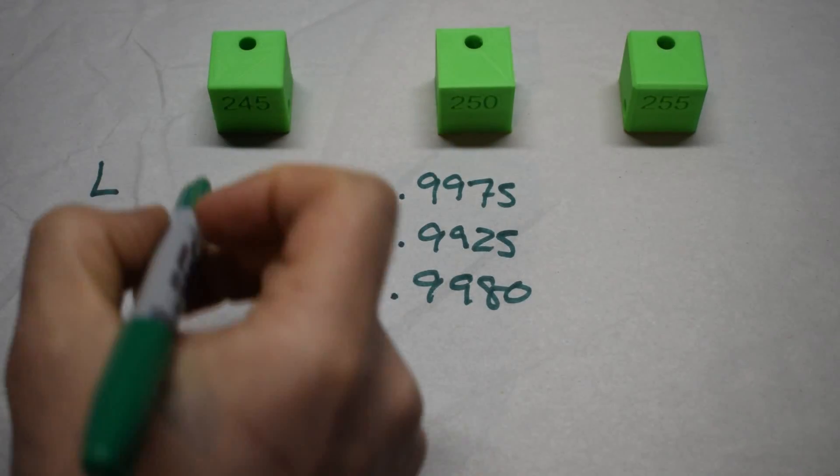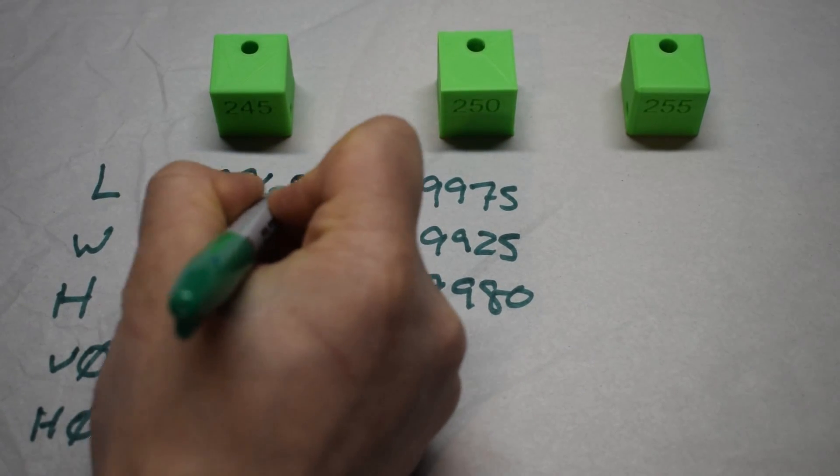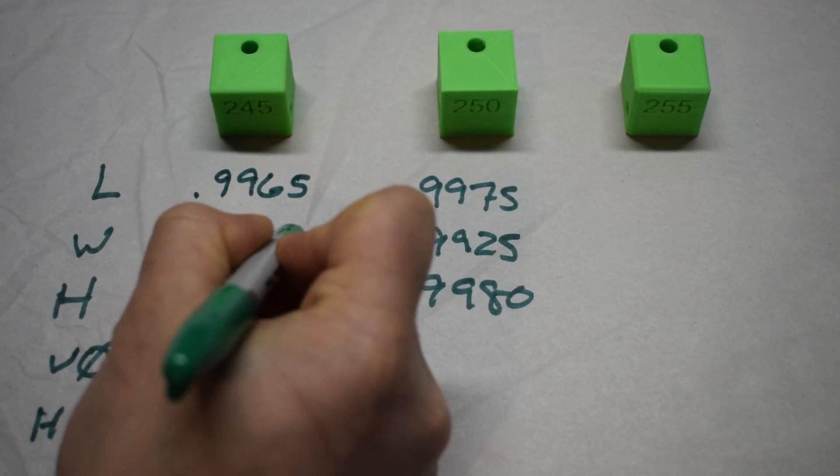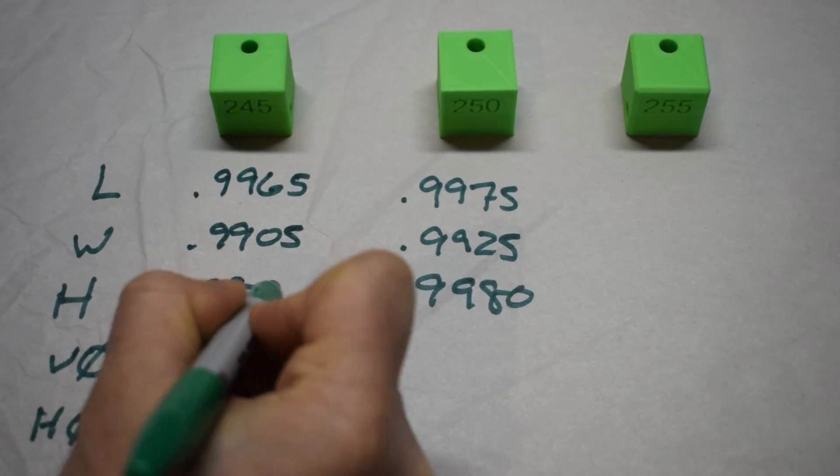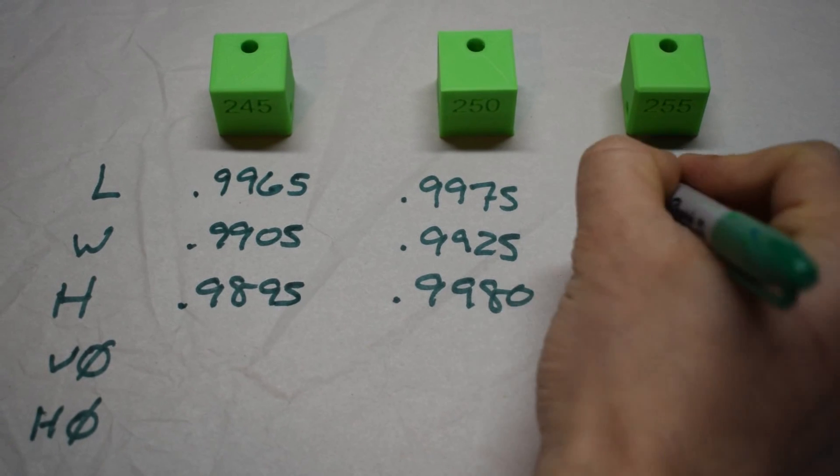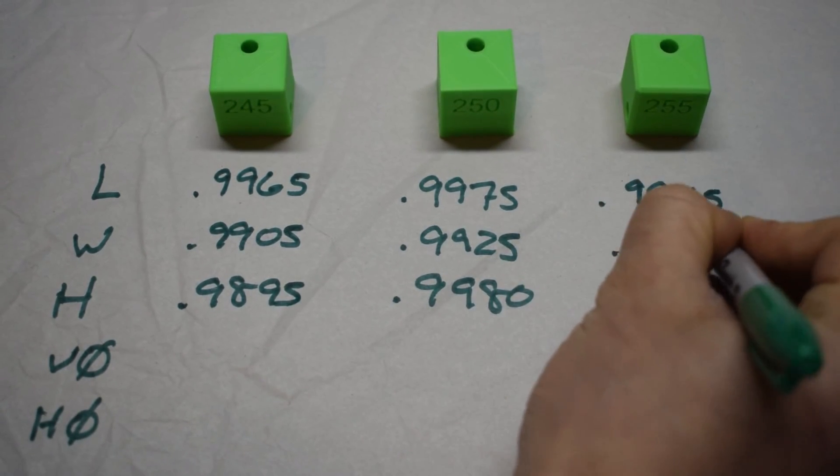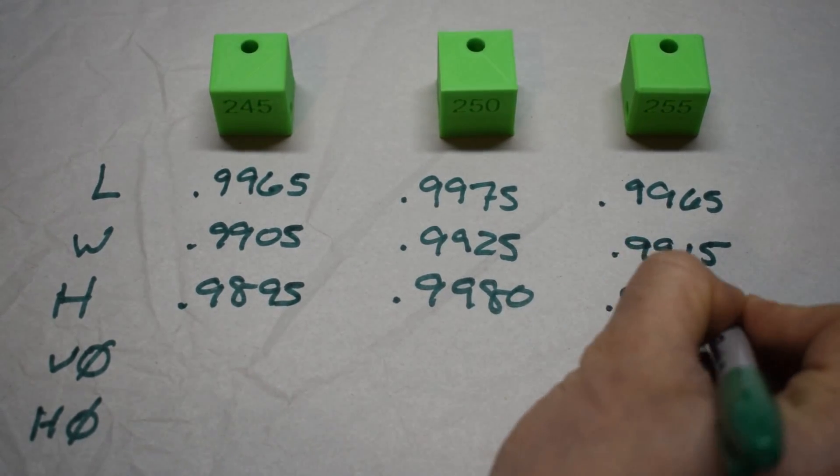For the 245 with the rounded corners: 0.9965, 0.9905, and 0.9895. And for the chamfered part: 0.9965, 0.9915, and 0.9885.